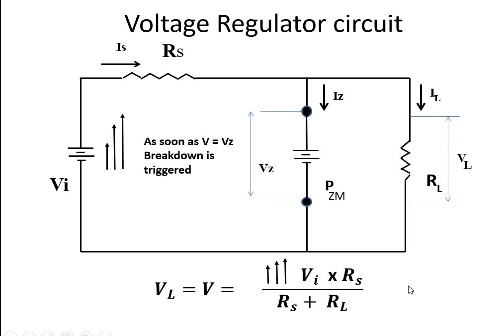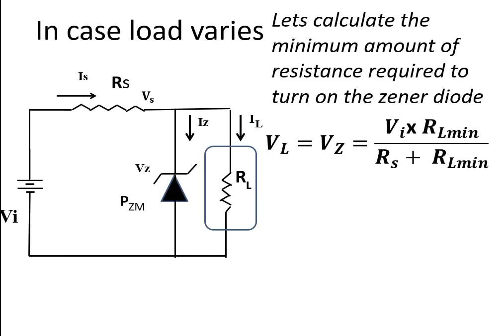The diode is now behaving like a constant voltage source, providing a constant Vz volts to the load resistor. Now, in case Vi is increased and now stable at a certain value, but load is varying, load is susceptible to variations. Then how can we calculate the range of variation? The Zener diode can only handle up to a limit. How can we calculate this range, the RL minimum and RL maximum?